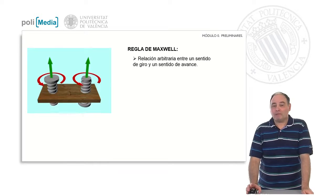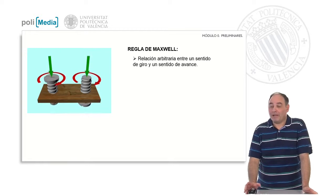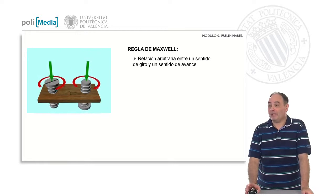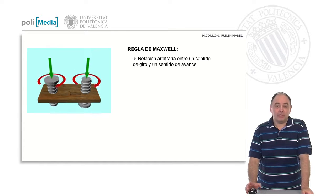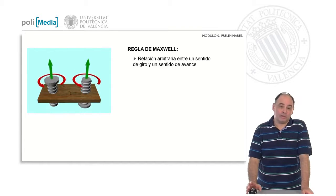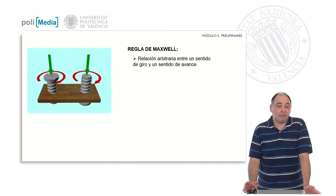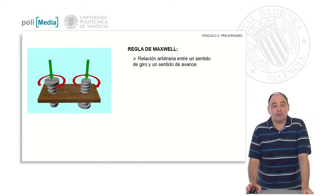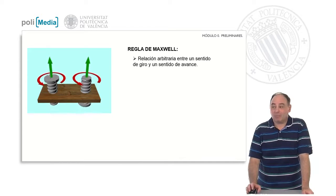First, we are going to need the so-called Maxwell's rule, a convention — an arbitrary relationship between the direction of rotation and the direction of advance. In this video, we have the direction of rotation in red and the direction of advance in green. When the direction of rotation is inverted, the direction of advance is inverted. It is an arbitrary relationship; it could have been the other way around, but it is the one that has been chosen.